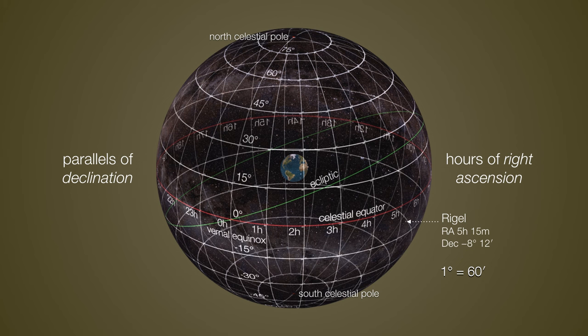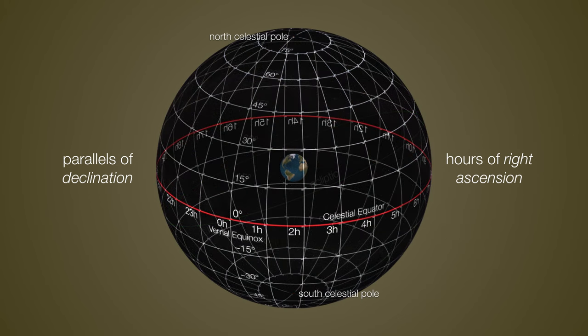Remember, we can take a single degree and we can split that up into 60 minutes of arc. So, this coordinate system, since it's based on the celestial equator, we call this the equatorial coordinate system. And it's a really convenient way for us to define every single point on the celestial sphere.